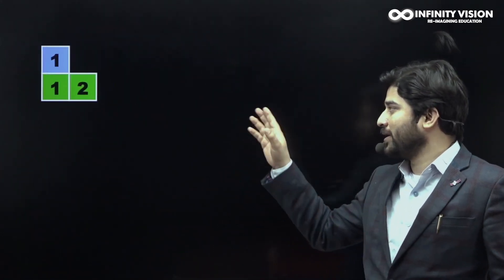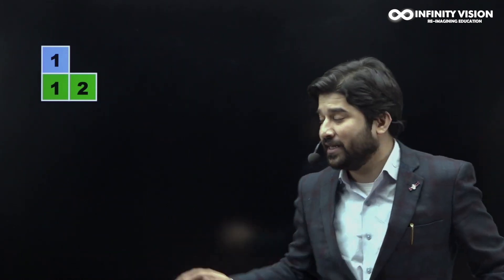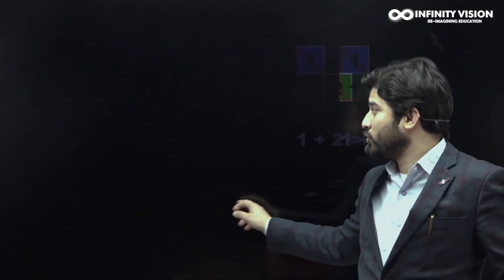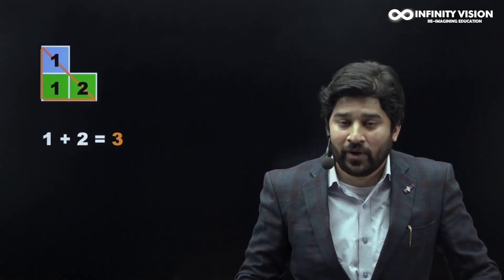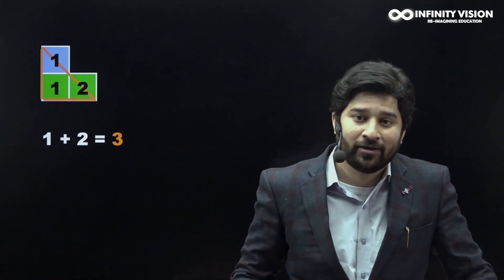We are going to call 1 as our first triangular number, representing it with a square shape. Now to build the second triangular number, I am going to add two more squares to it, something like this. So the second triangular number is basically 1 plus 2, and the shape looks like a triangle. 1 plus 2 equals 3, so 3 is your second triangular number.